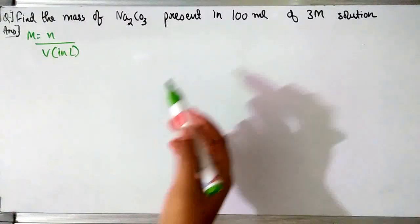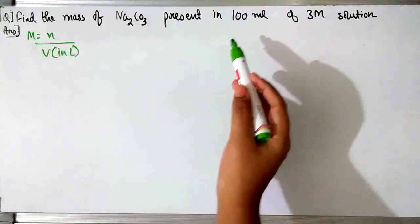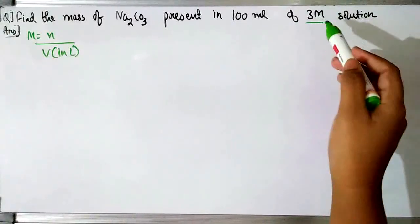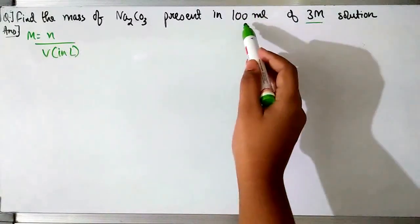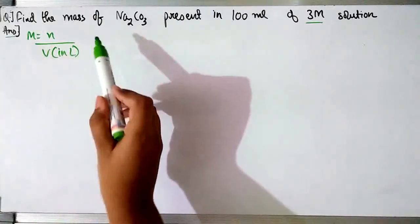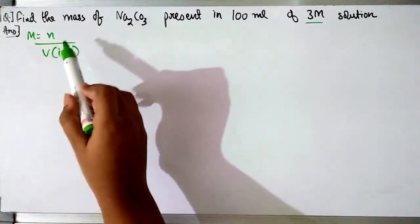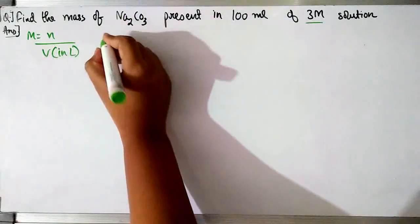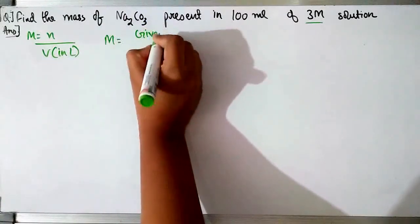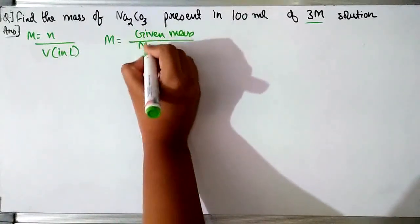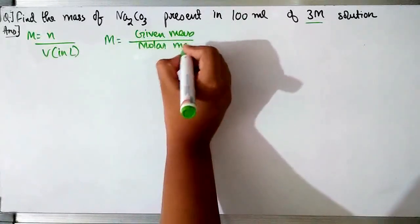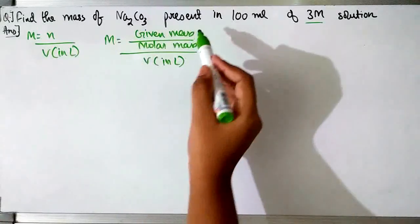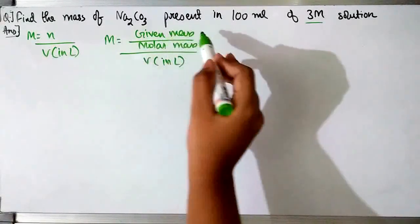In this question we have to find the mass of Na₂CO₃ present in 100ml of a 3M solution. Molarity is given as 3 and the volume of solution is also given. We have to find the mass of Na₂CO₃. In the formula, in place of number of moles of solute, we can write given mass upon molar mass.